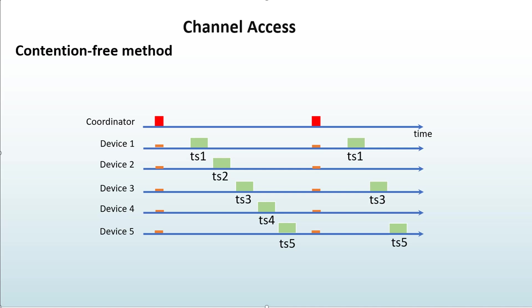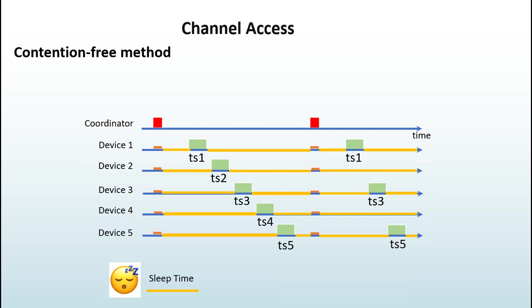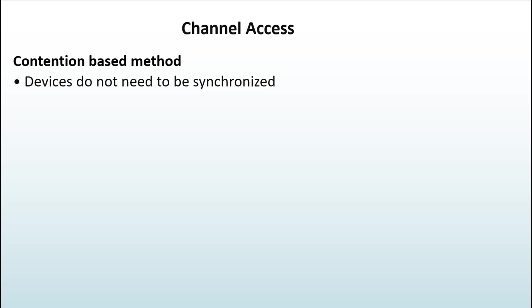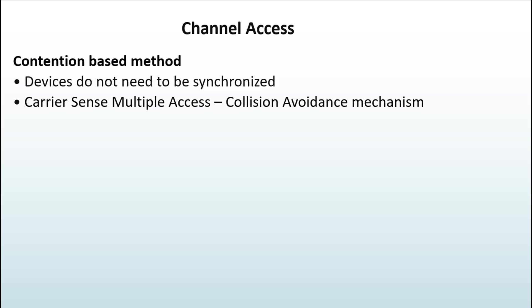This can be pre-programmed in the coordinator by the developer. Because end devices know ahead of time when they can transmit, they will go to sleep and only wake up to either transmit data or listen to the beacon. This is what enables low power consumption in the Zigbee standard. For the contention-based method, devices do not need to be synchronized — the Carrier Sense Multiple Access Collision Avoidance (CSMA-CA) mechanism is used by all devices to access the channel.